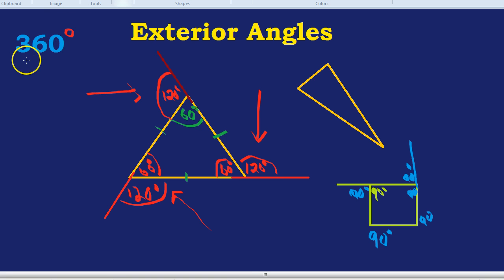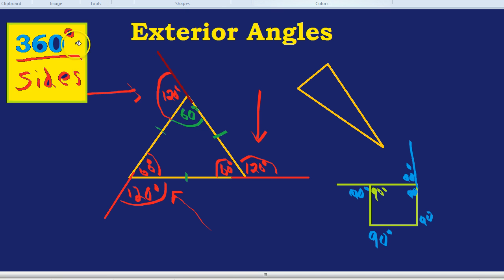What it would actually be is if you do 360 degrees divided by the number of sides of the regular shape, you always get the exterior angle. Let me highlight that because it's what this video is all about. 360 degrees divided by the number of sides will give you your exterior angle.